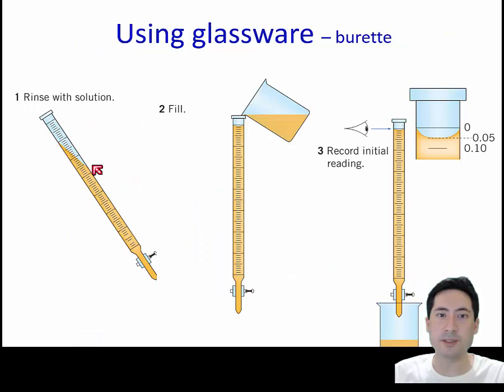Similarly with your burette, rinse it with the solution you're going to use. Make sure there's no air bubbles there. Make sure the meniscus is there. And most importantly, read it to half the smallest increment.